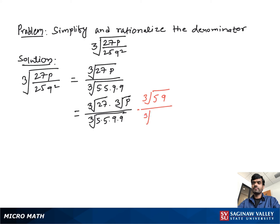So what to do? Multiply numerator and denominator both with cube root 5q. Then you get cube root 27 as three, times cube root 5pq, over cube root five times five times five times q times q times q.